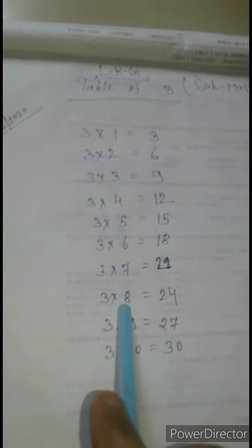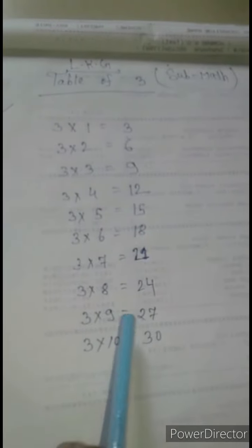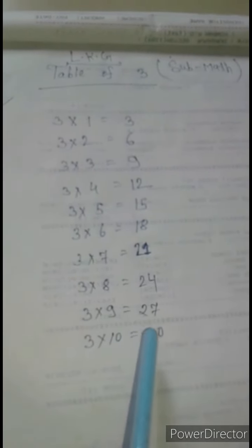is 21, 3 times 8 is 24, 3 times 9 is 27, 3 times 10 is 30. Okay.